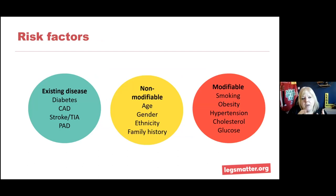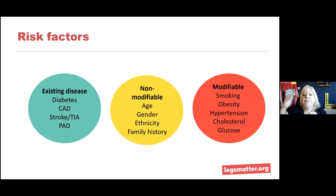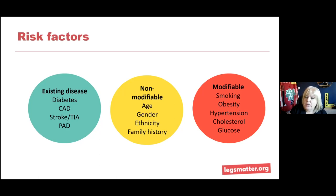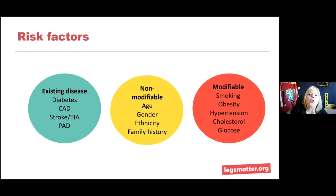What causes arterial disease? From a vascular point of view we talk about vascular risk factors. Some of these you can't do anything about — we call them non-modifiable risk factors. Arterial disease occurs more as you get older, over 50 it starts to occur more in the arteries. It happens more in men than females, and we think that's because of the female sex hormones. There are also issues in terms of ethnicity — some populations are much more likely to develop arterial disease than others. And as I said, there is a strong family history element. Unfortunately, there's very little you can do about those non-modifiable risk factors.